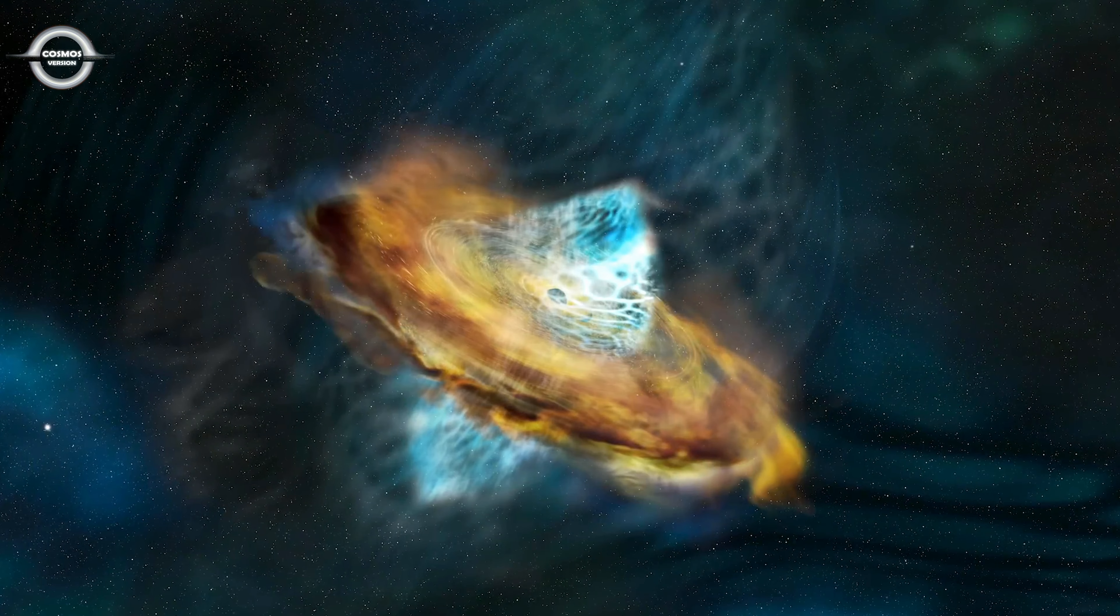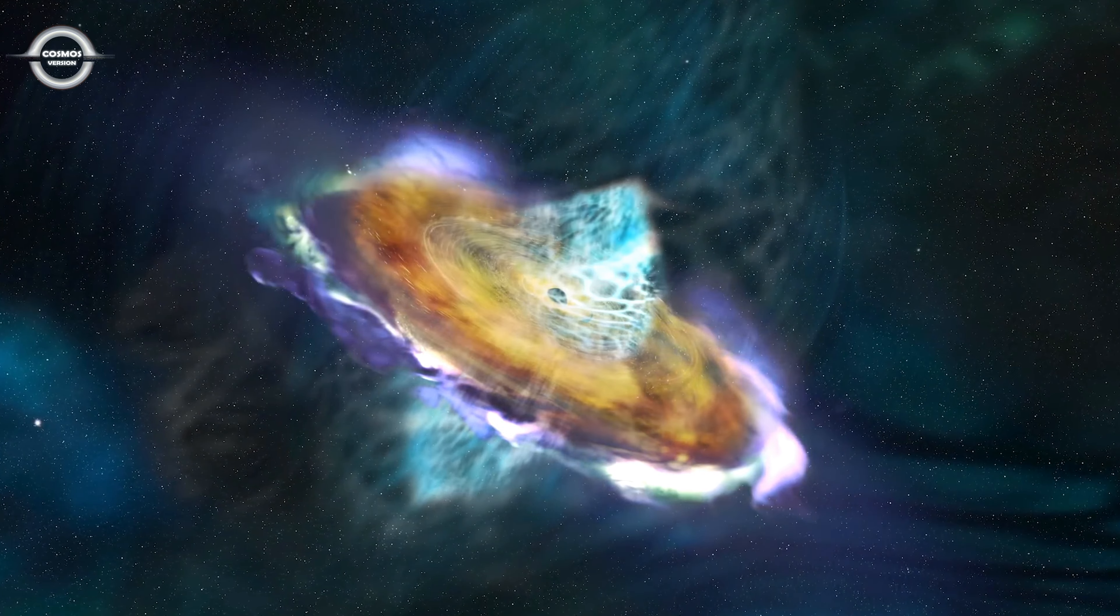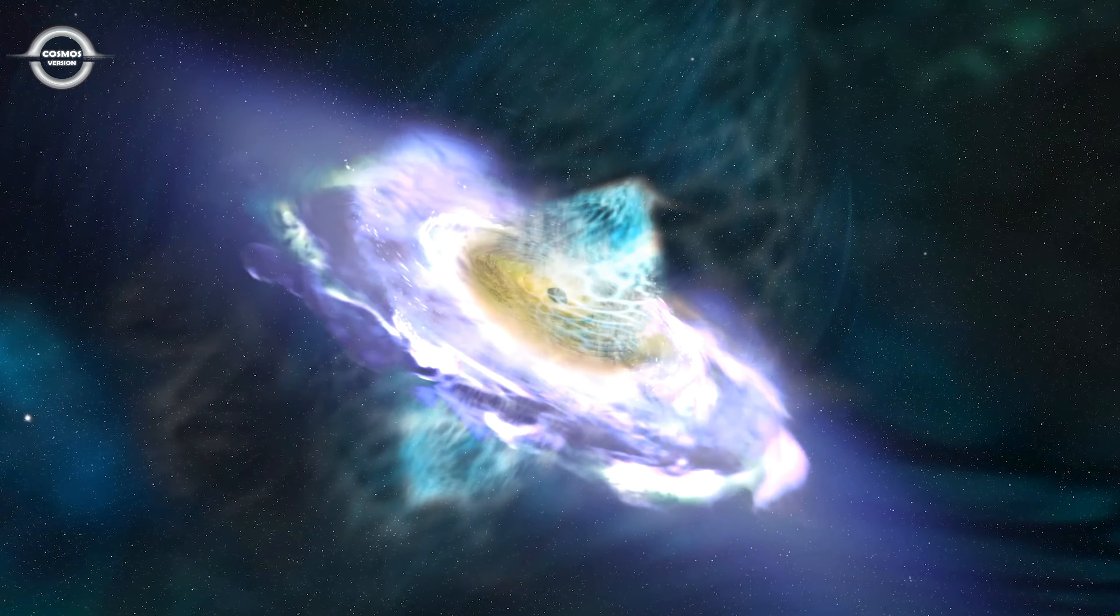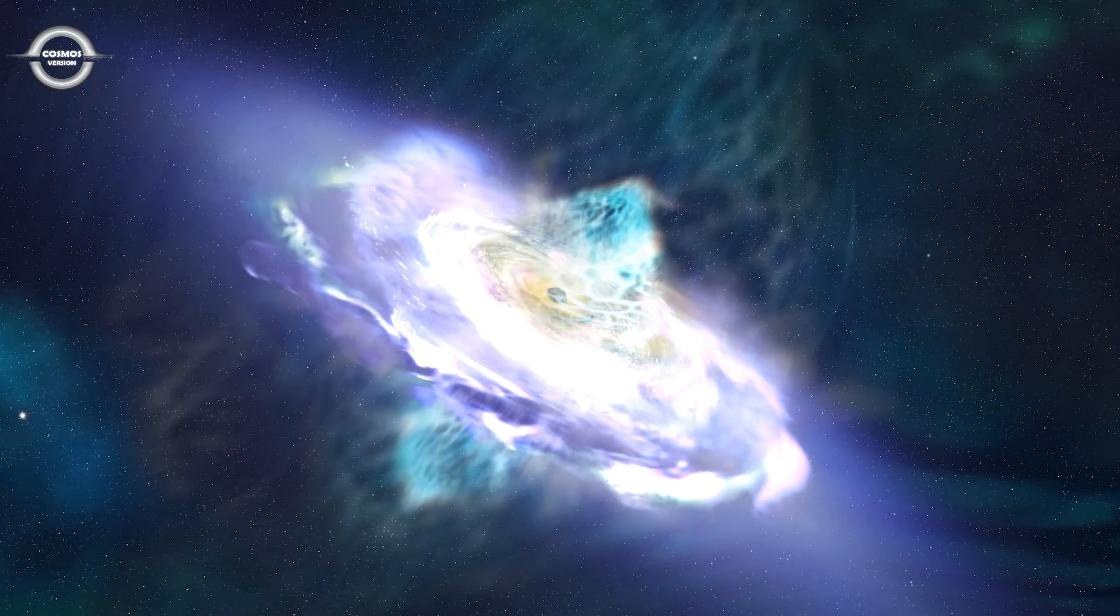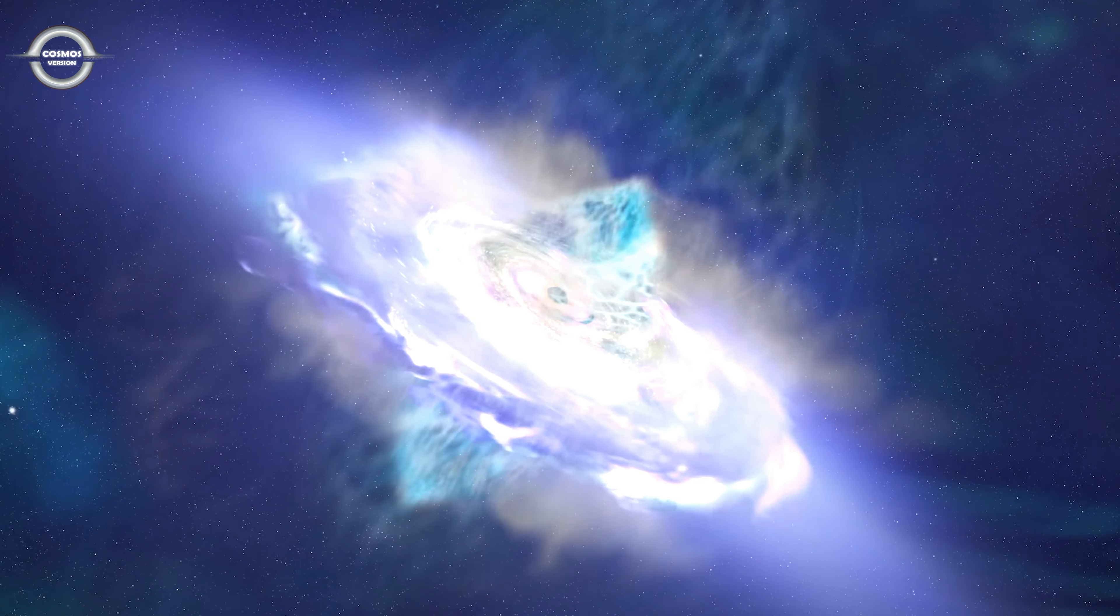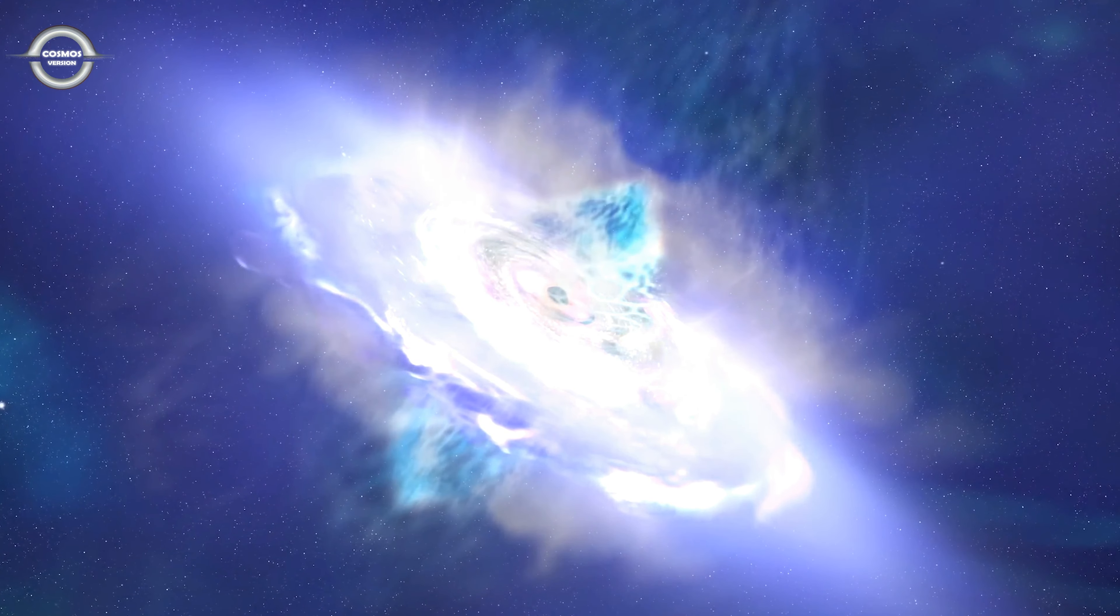Starting in December 2017, the galaxy began to brighten in visible and ultraviolet light. The source of this brightening appeared to be the disk of material around the supermassive black hole at the galaxy's center. It peaked three months later at nearly 100 times its previous brightness.